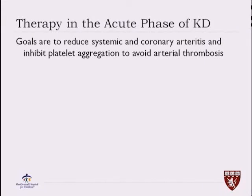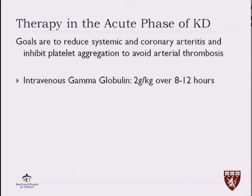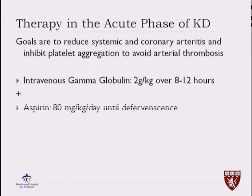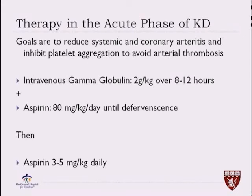The goal of therapy in the acute phase of Kawasaki disease is to reduce the systemic and coronary arteritis and to help with platelet aggregation so we can avoid arterial thrombosis and myocardial infarction. The treatment is with intravenous gamma globulin at a dose of two grams per kilo over time. We have to be careful because it's a high solute load — equivalent to giving 40 milliliters per kilo of crystalloids — and in someone who has myocarditis, they might not tolerate this and can have pulmonary edema. We also use high-dose aspirin to help with systemic inflammation for 48 to 72 hours after the fever is gone, then switch to low-dose aspirin at 3 to 5 mg/kg daily for six to eight weeks.